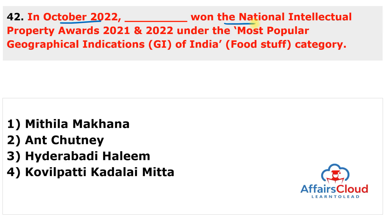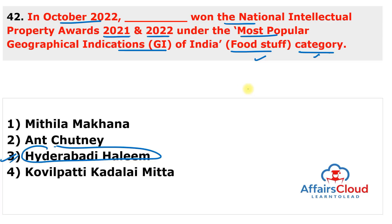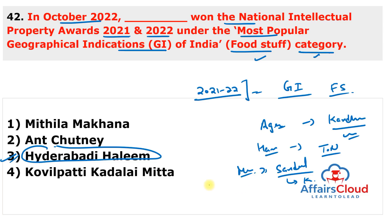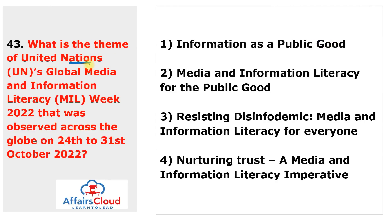Next question: which product won the National Intellectual Property Award 2021-22 under the most popular Geographical Indication of India — foodstuff category? The answer is Hyderabadi Haleem. Hyderabadi Haleem won the National IP Award for 2021-22 under the foodstuff GI category. In the agriculture category, Kandhamal Haldi from Odisha won. In the handicraft category, Tanjore Art Plate from Tamil Nadu won. In the manufacturing category, Mysore Sandal Soap from Karnataka won. In the natural category, Chunar Balua Patthar, a GI tag of Uttar Pradesh, won.